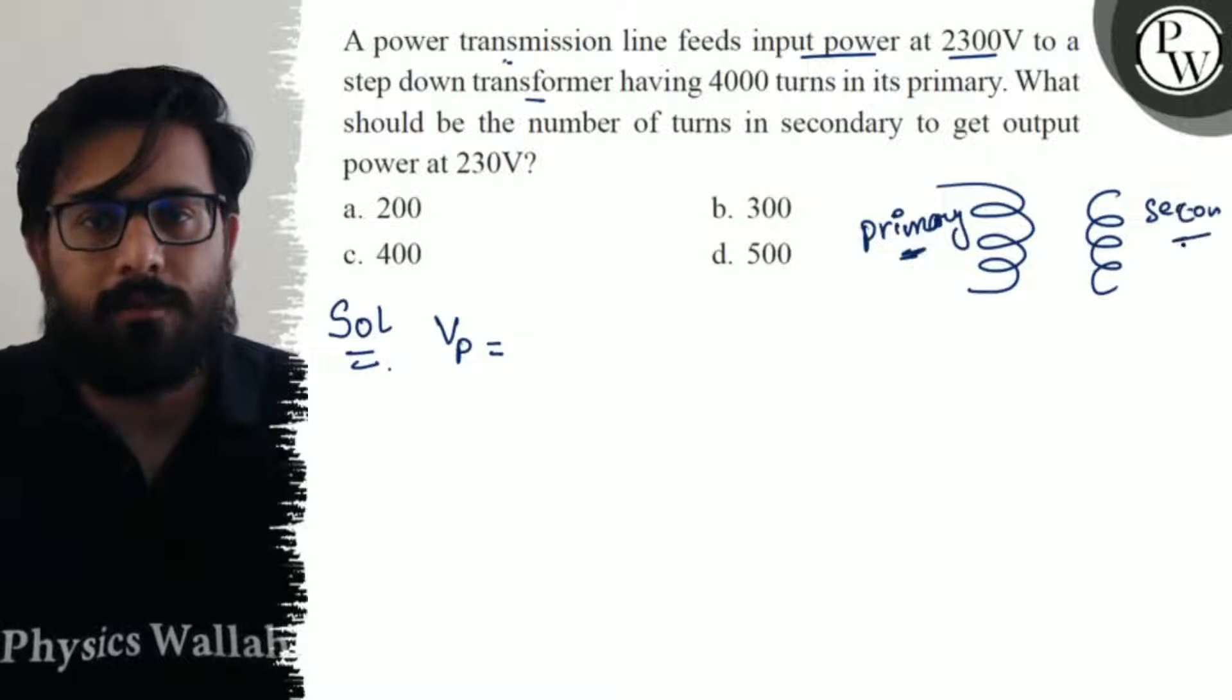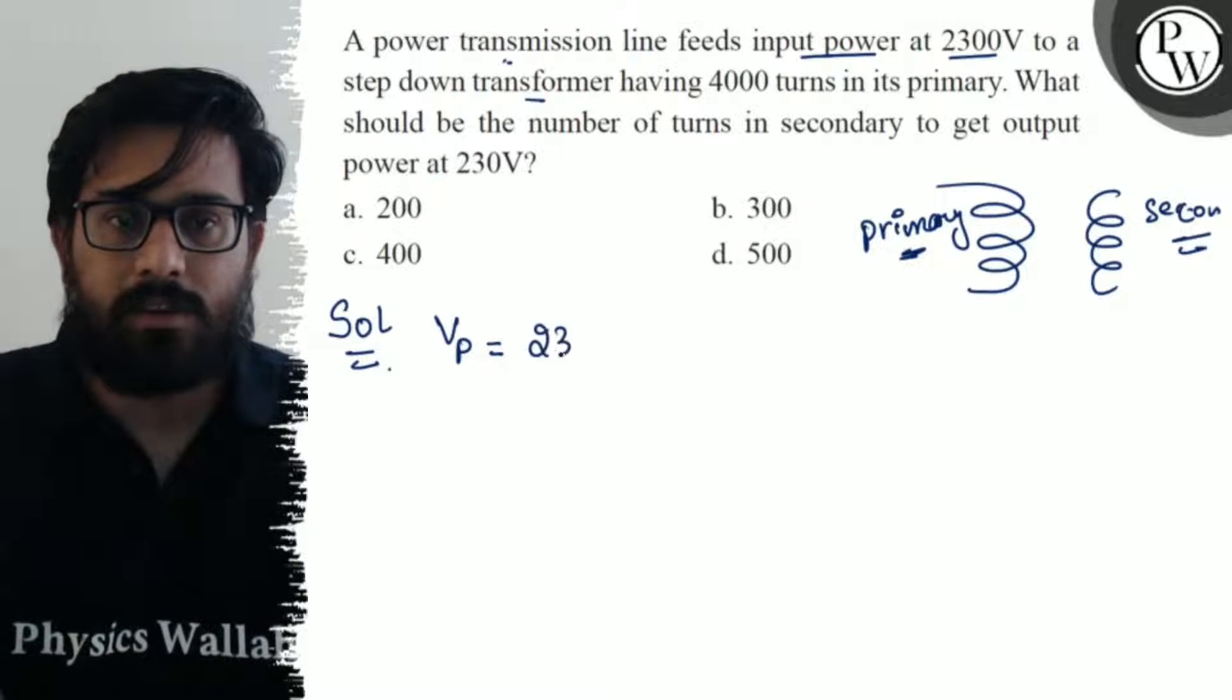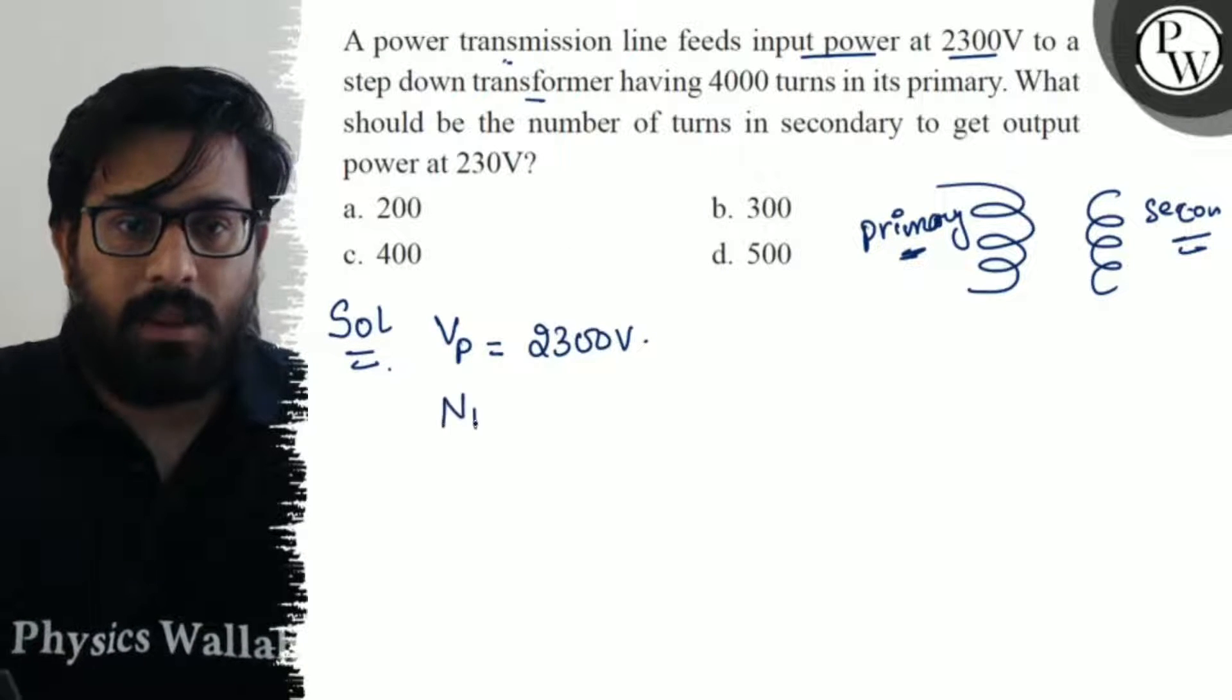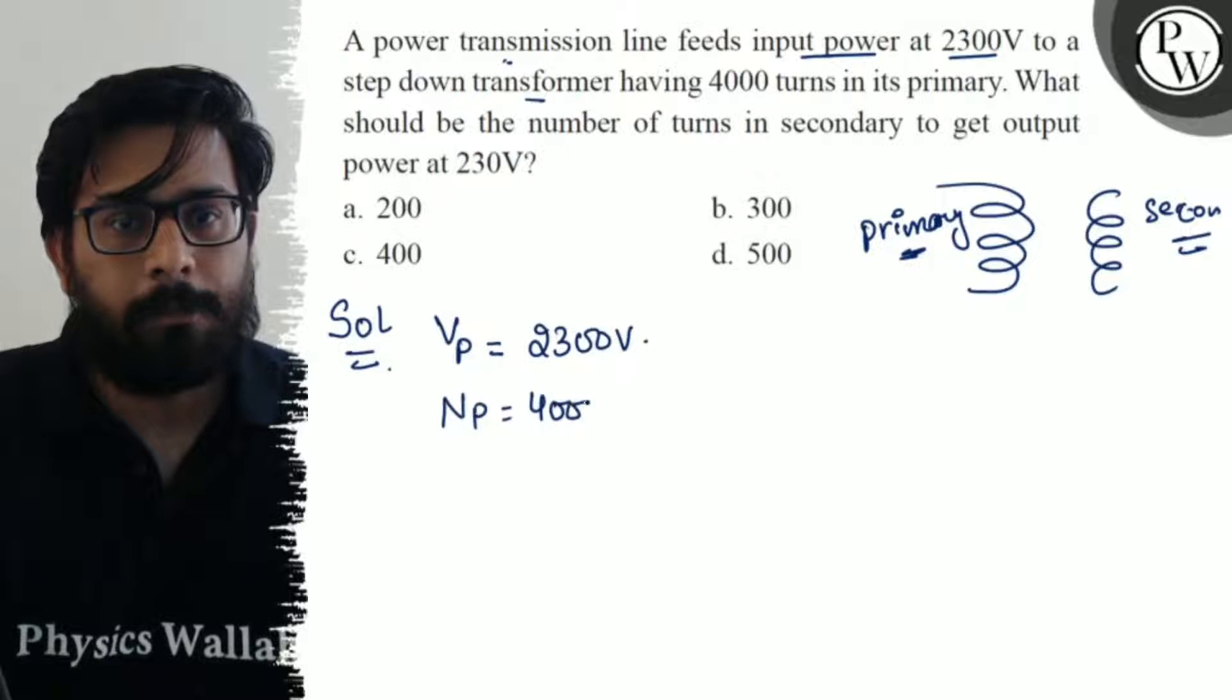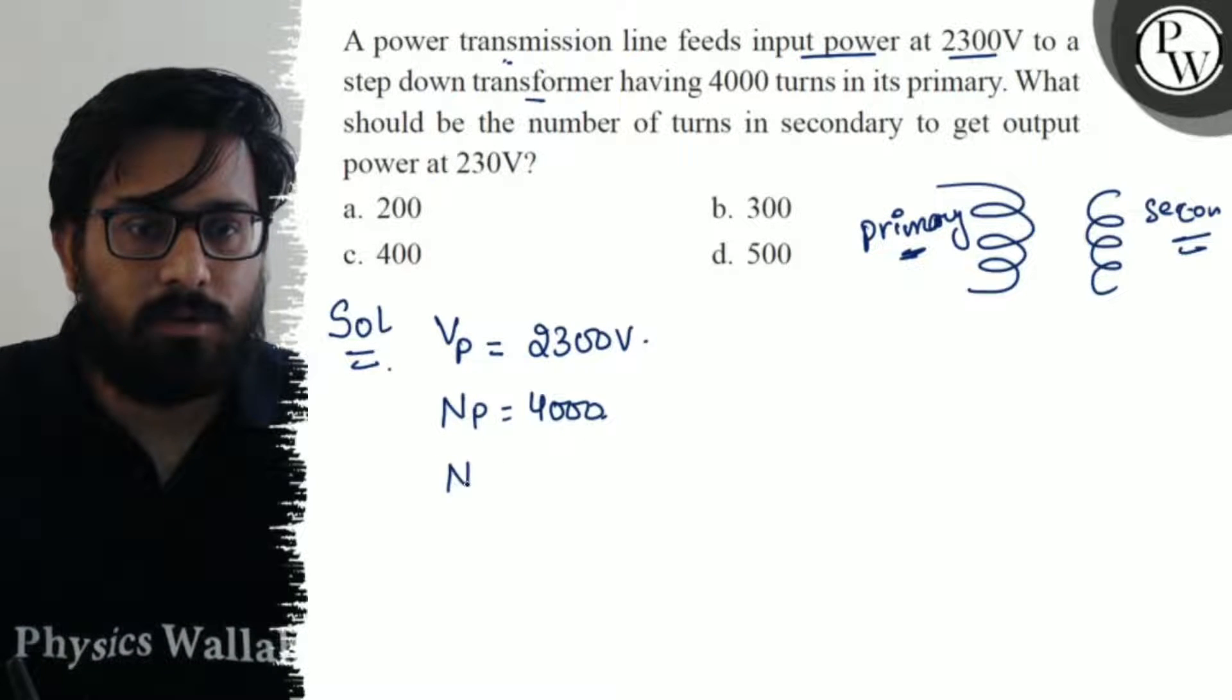So the input voltage in the primary circuit is 2300 volts. Number of turns in the primary, Np, equals 4000. What should be the number of turns in the secondary? The secondary voltage, which is the output voltage, should be 230 volts.